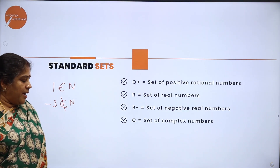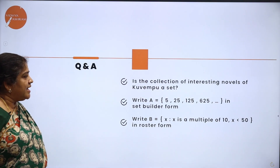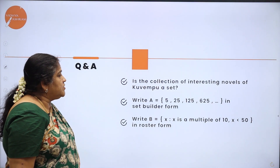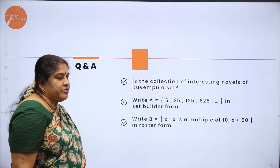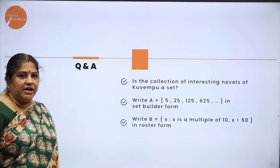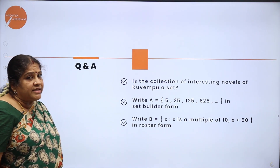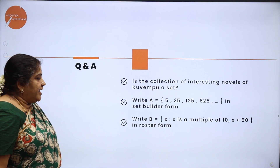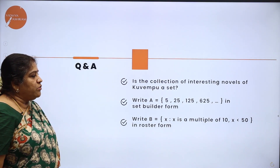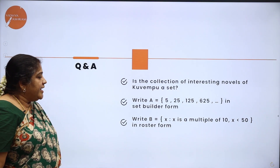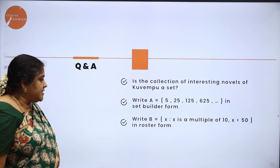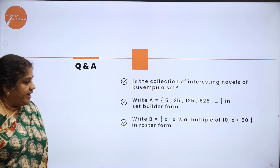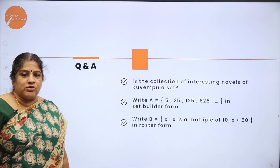For a small exercise, here are questions to answer. First question: Is the collection of interesting novels of Kovempu a set? (Kovempu is a great poet in Karnataka.) Second question: Write A = {5, 25, 125, 625, ...} in set builder form. Third question: Write B = {X | X is a multiple of 10 and X < 50} in roster form.